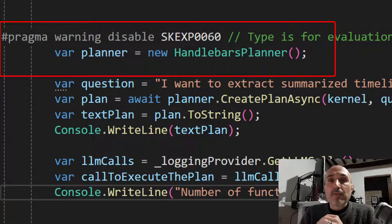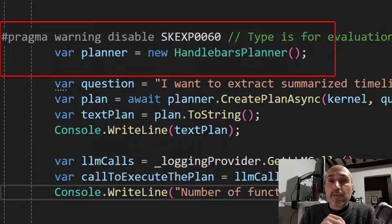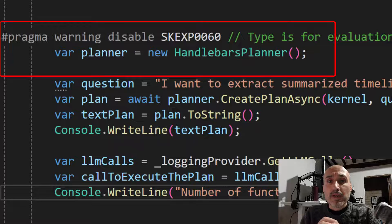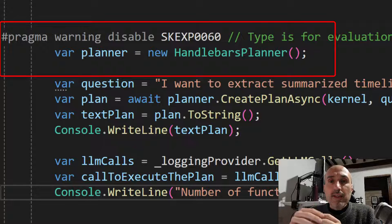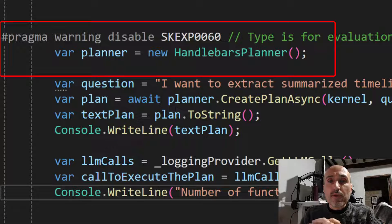To solve this problem, Semantic Kernel has an experimental feature using handlebars planner. Planners were used in the previous beta version, but now it's changed a little bit. Now the planner is contained into the handlebars planner. You need to use a pragma instruction to reassure the compiler that you know you're using an experimental feature.